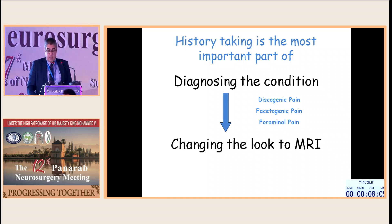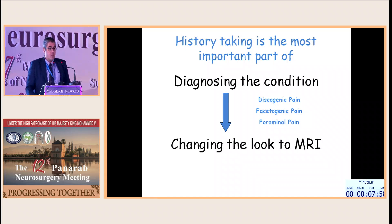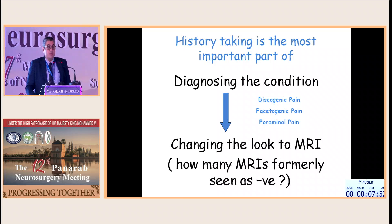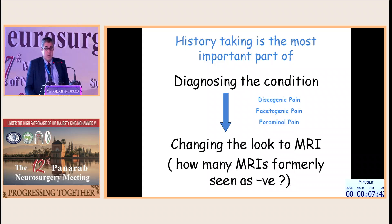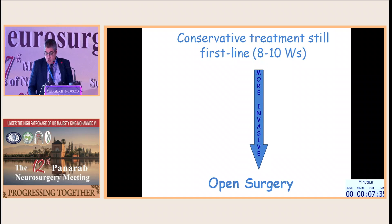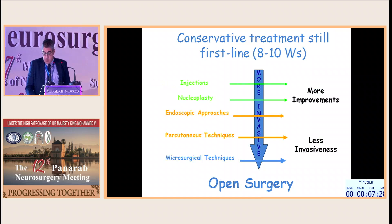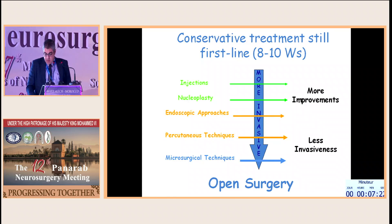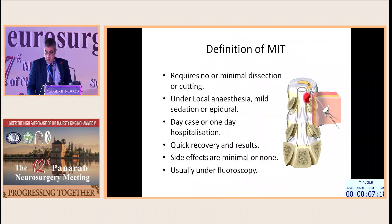Differential diagnosis of back pain into discogenic, facetogenic, and foraminal pain will help much in decision making in the minimally invasive corridor. Thinking minimally invasive will make many MRIs, formerly seen as negative, yield positive data. The scope of minimally invasive treatment includes injections, nucleoplasty, anti-endoscopic approaches, percutaneous techniques, ending in microsurgical techniques with frank surgery coming later on.